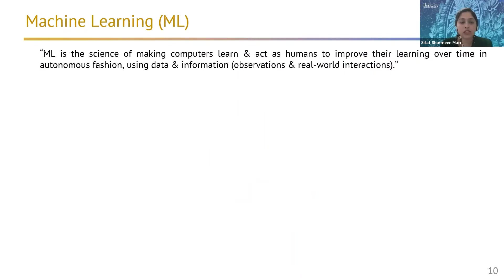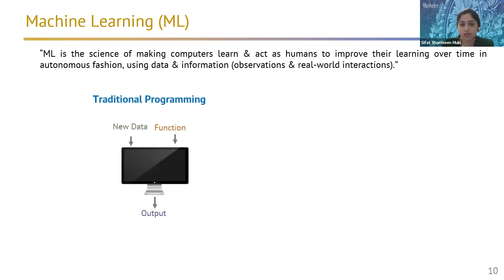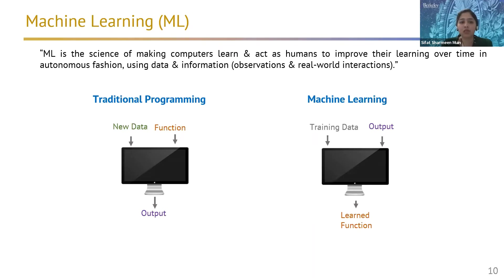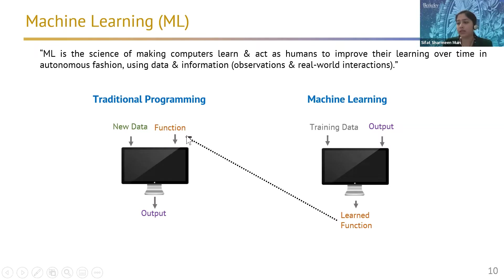Machine learning is the science of making computers learn and act like humans, improving their learning over time in an autonomous fashion using data and information. In traditional programming, a programmer would study a phenomenon and develop an algorithm — say, y = mx — so for a new x you can find y. In machine learning, we take the output and training data together to generate a learned function, which can then be used with new data to get predictions.